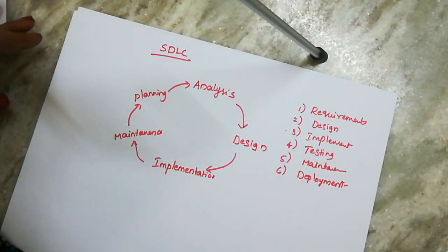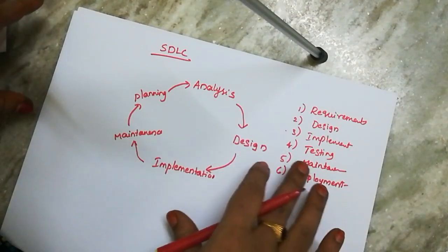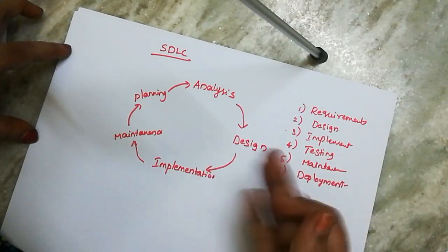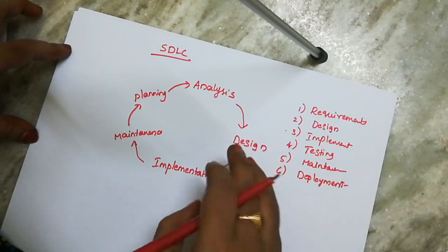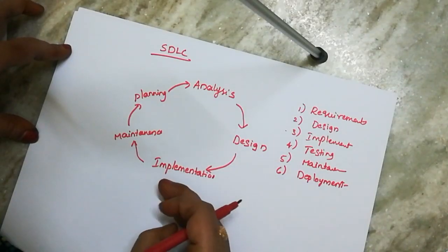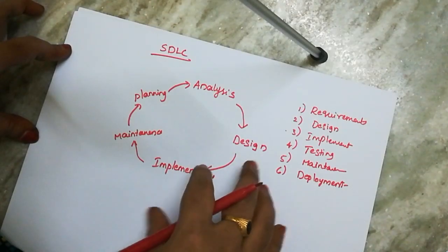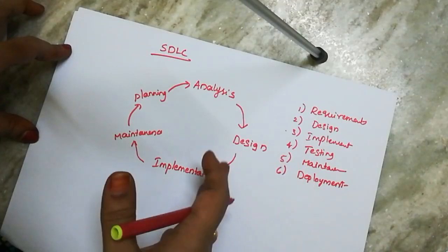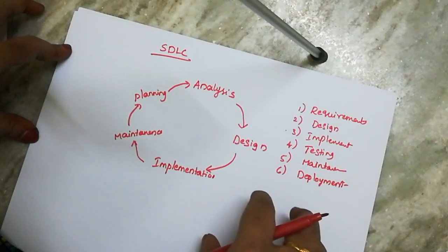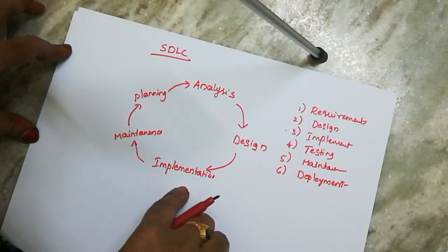In the design stage, we create a diagrammatical representation of the total project. We design the entire project diagrammatically. From the output of the design stage, we move to coding — that is implementation. In the implementation stage, we use many languages: C, Java, data structures, C# — we start coding based on the design.